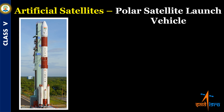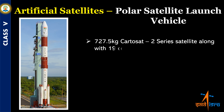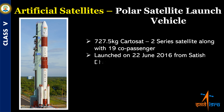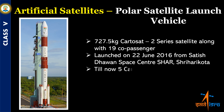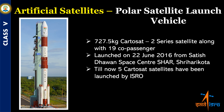ISRO's Polar Satellite Launch Vehicle carried the 727.5 kg Cartosat-2 series satellite along with 19 co-passenger satellites. It was launched on 22 June 2016 from Satish Dhawan Space Centre, Sriharikota. Till now five Cartosat satellites have been launched by ISRO. This series is a part of the Indian Remote Sensing Program.